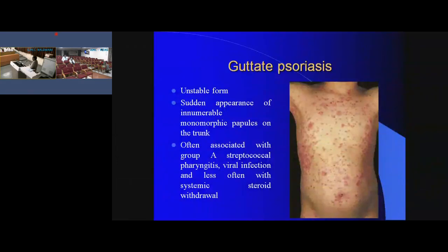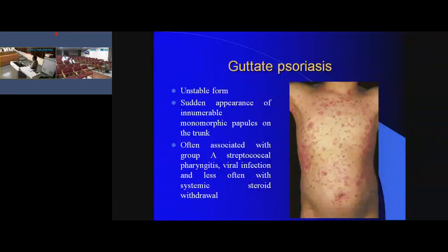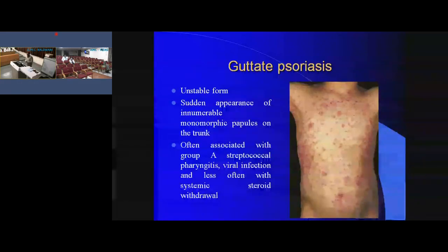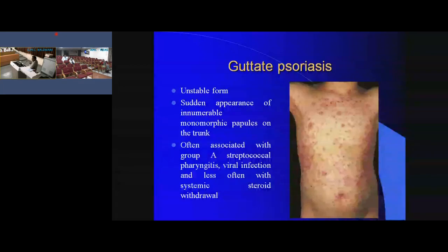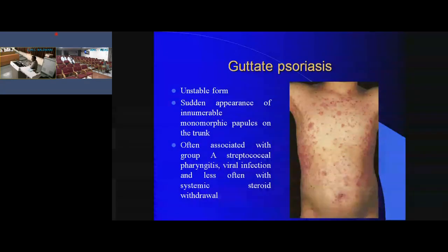Guttate psoriasis is usually seen in the adolescent age group. It usually appears following infections — the patient may give history of pharyngitis, sore throat, or fever prior to appearance of the lesions. The most common triggers are streptococcal infections and viral infections, which can lead to guttate psoriasis in children or adolescents. The common site is the trunk.